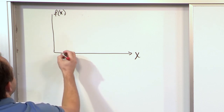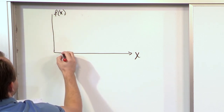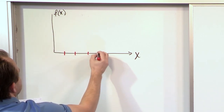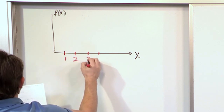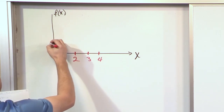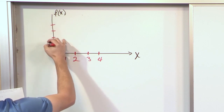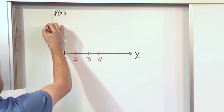So here we have a graph. We have the x-axis and f of x up here. On the x-axis, we have 1, 2, 3, 4, and on the y-axis, we also have 1, 2, 3, 4.